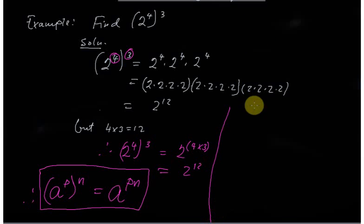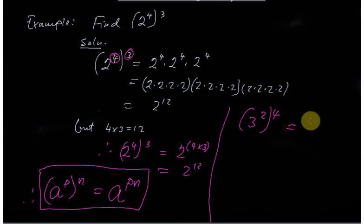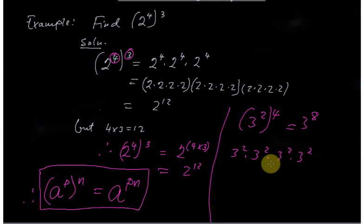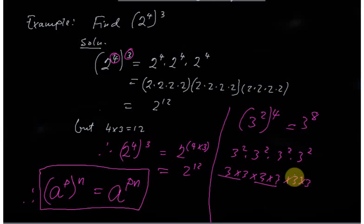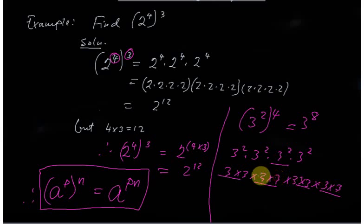For example, consider three to the power two, then to the power four. This is the same as three to the power eight. Expanding it: three squared times three squared times three squared times three squared gives eight threes multiplied together — easily obtained by simply multiplying the exponents: two times four equals eight.